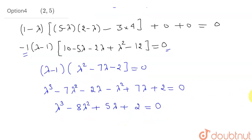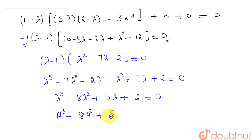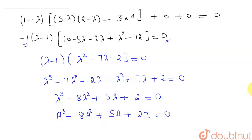This is the characteristic equation of this matrix. By the Cayley-Hamilton theorem, every matrix satisfies its own characteristic equation, so: A³ − 8A² + 5A + 2I = 0.